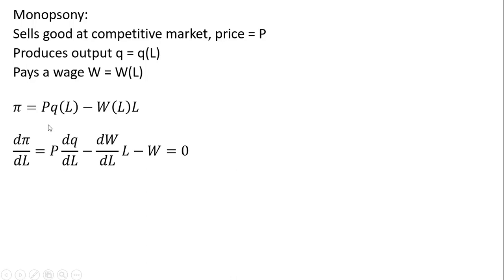We're going to maximize profit by taking the derivative of the profit function with respect to labor. We get P multiplied by the marginal product of labor. The derivative of the production function with respect to labor is the marginal product of labor.